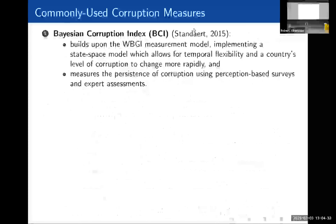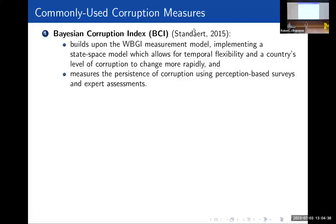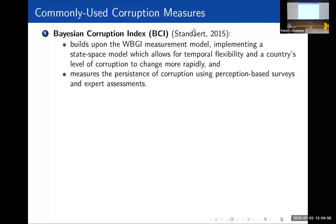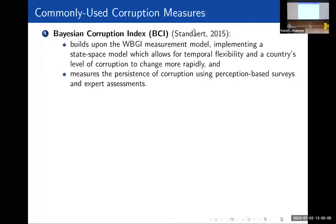Our third measure of corruption is the Bayesian Corruption Index, or the BCI, which actually builds upon the previous two corruption measures. Using specifically the WGI measurement model, the BCI implements a state-space model, which allows for temporal flexibility, giving us a longer range of corruption scores and allowing a country's level of corruption to change more rapidly over time. This also measures the persistence of corruption using those perception-based surveys and expert assessments.